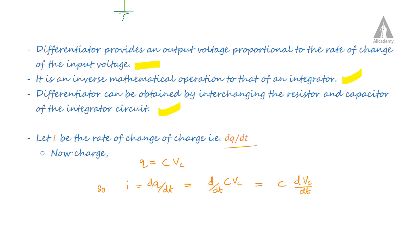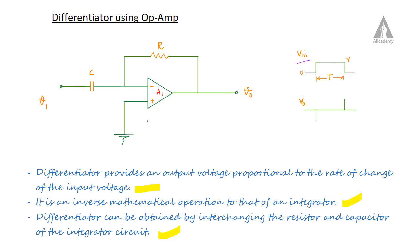The input terminal is at virtual ground because of the virtual short condition. The two input nodes of the op-amp are virtually shorted, and since the non-inverting terminal is grounded, we can consider the inverting terminal as virtual ground. The current flowing through the input capacitor will all flow through the feedback resistor.